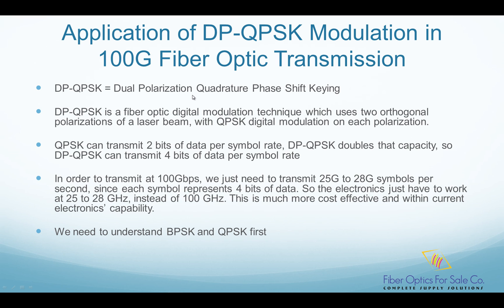DP-QPSK stands for Dual Polarization Quadrature Phase Shift Keying. It is a fiber optic digital modulation technique which uses two orthogonal polarizations of a laser beam with QPSK digital modulation on each polarization. Since QPSK can transmit two bits of data per symbol rate, DP-QPSK doubles that capacity to four bits per symbol. So to transmit 100Gbps, we only need 25G to 28G symbols per second, keeping electronics in the 25–28 GHz range — within current capability and much more cost effective.